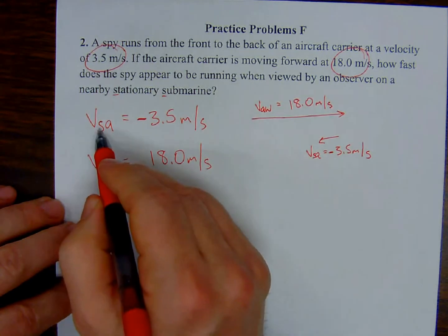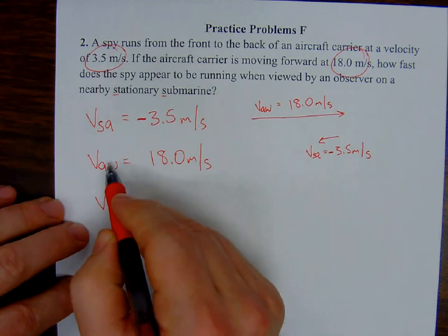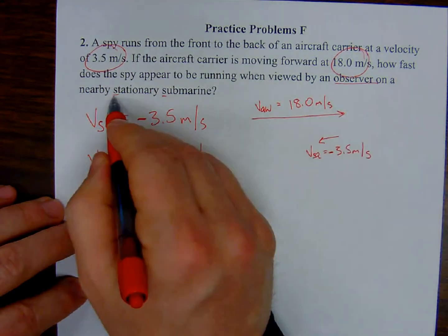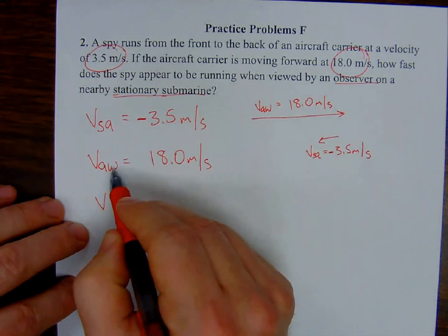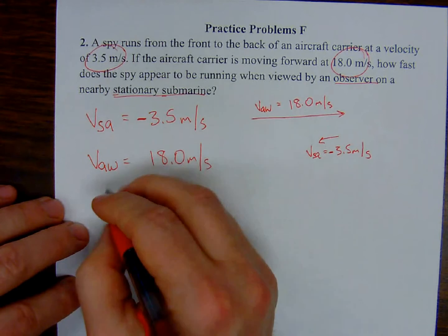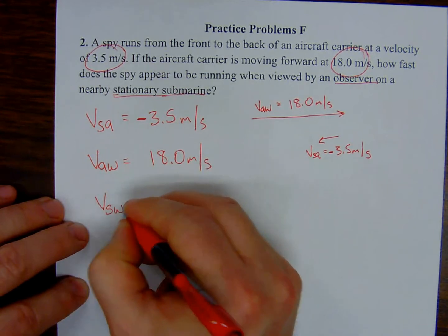So velocity of the spy with respect to the aircraft carrier, plus the velocity of the aircraft carrier with respect to the water. So I can plug these values in.